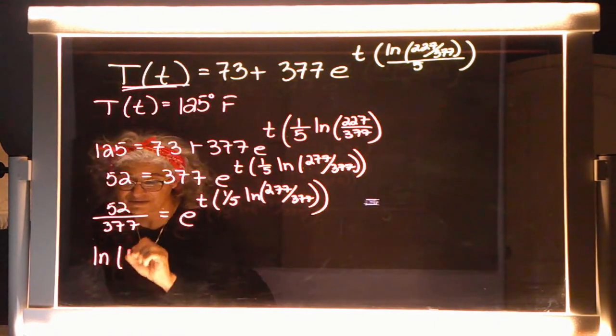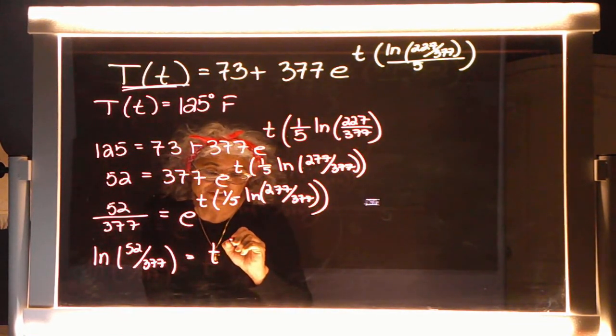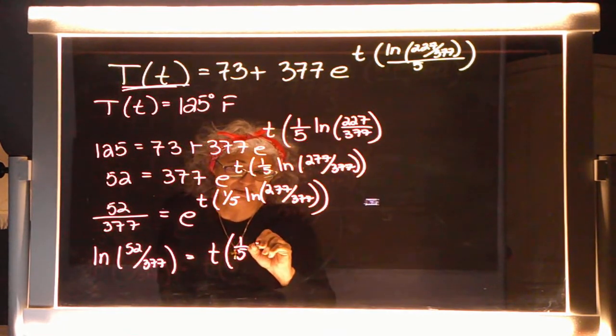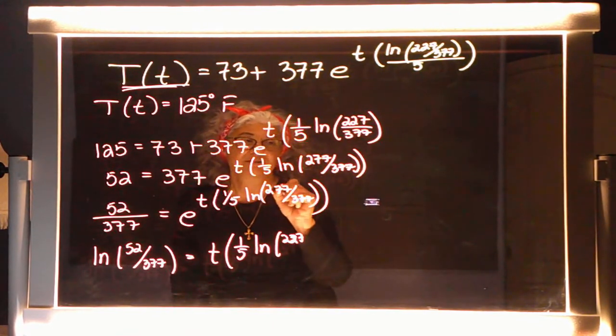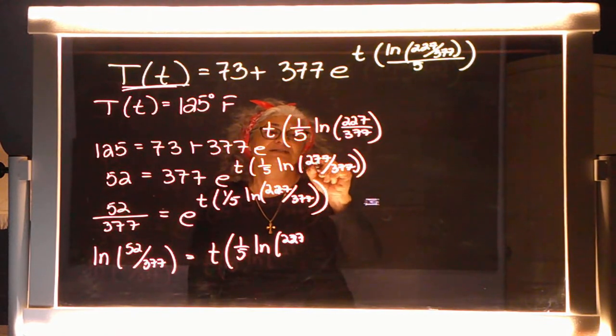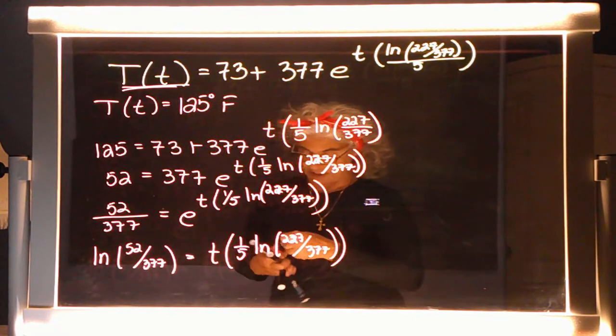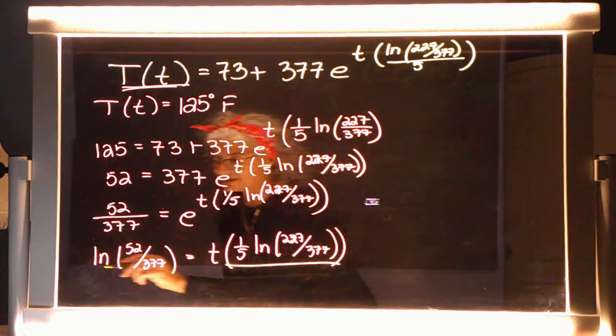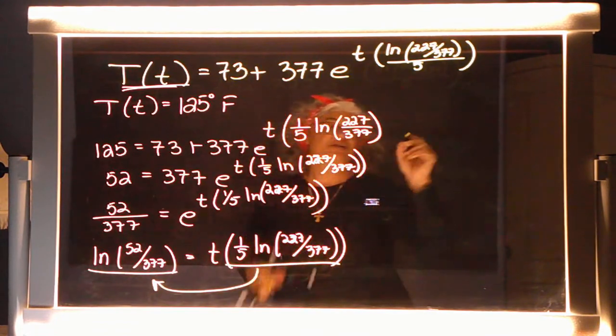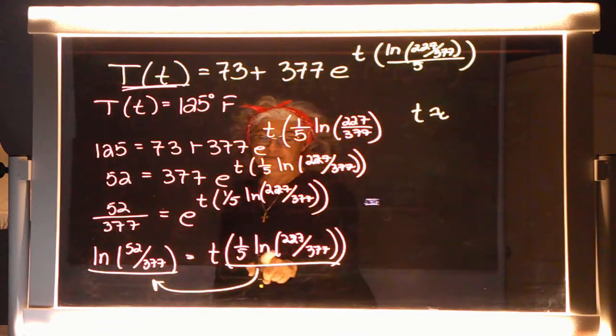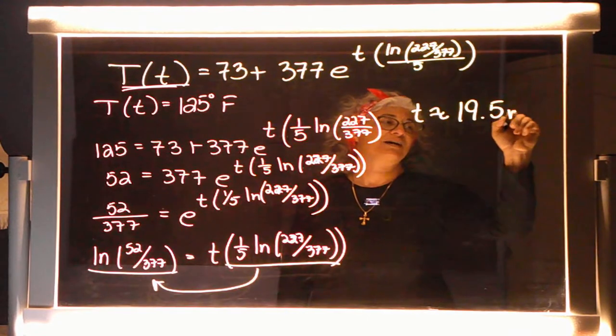So, natural log of this lovely fraction. And you know what you're going to have to do. Yep. You're going to have to divide by this parenthesis of the one-fifth natural log of 227 over 377. So, we're going to divide both sides by this thing. I'm running out of board space.